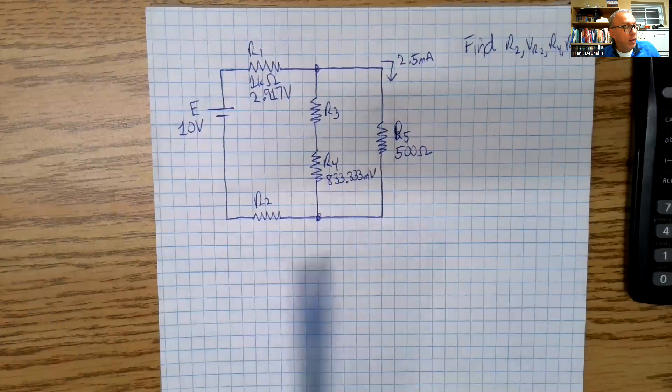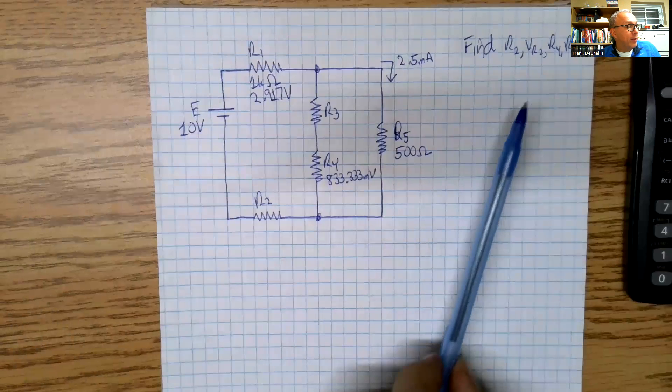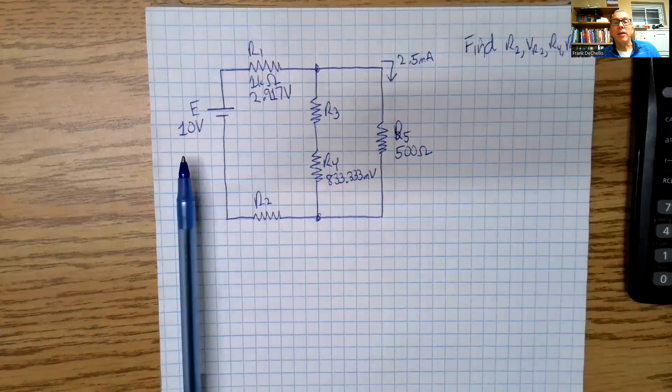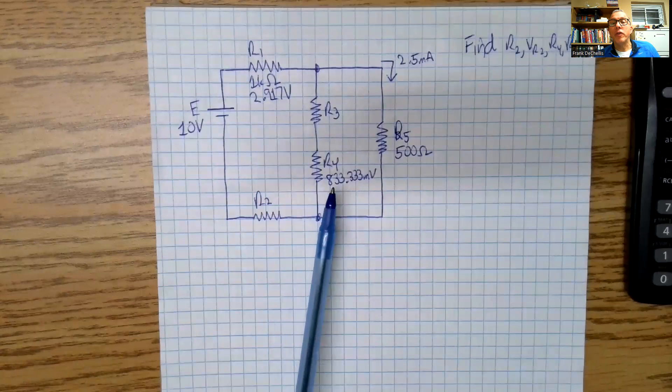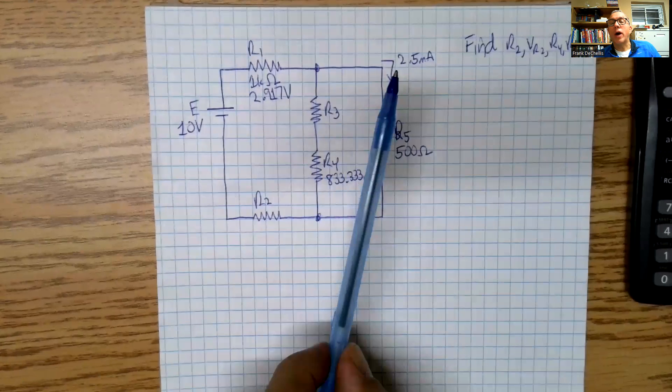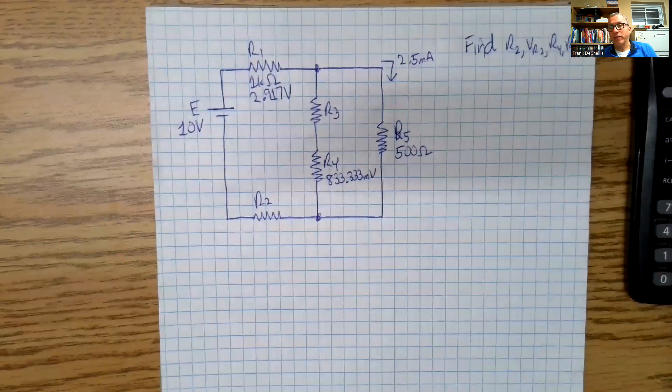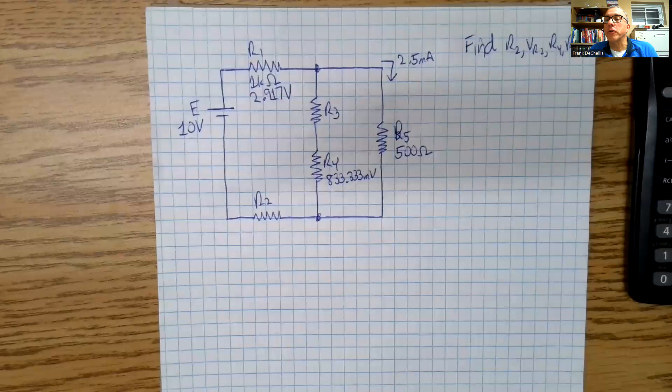We have five resistors. I've given you E, R1, VR1, VR4, IR5, and R5. What I've asked you here is to find R2, VR2, R4, and R3.